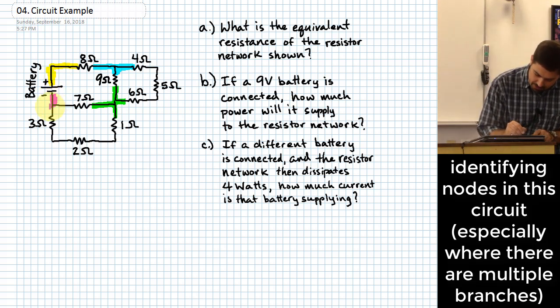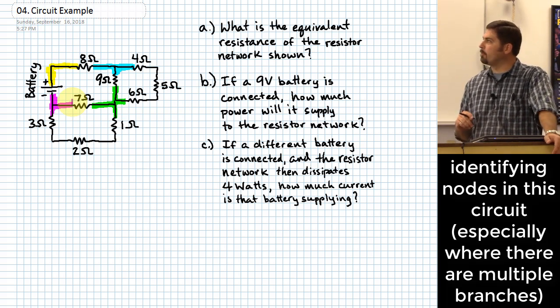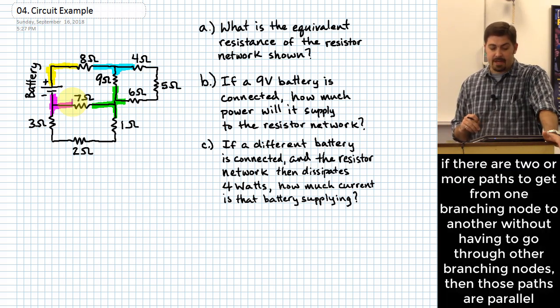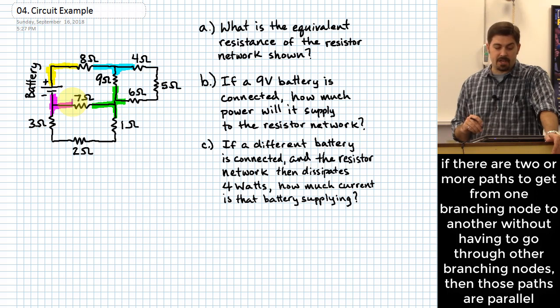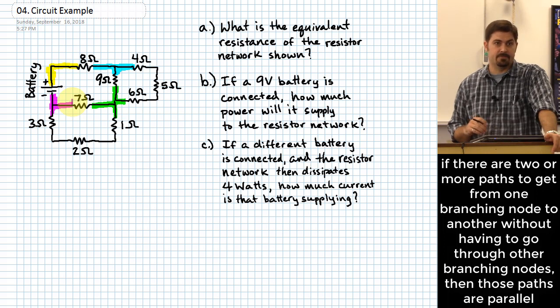So really, even though it's a good idea to be able to identify any node, the ones that we really care about are the ones where the current can split and go multiple different directions. Current coming in can go more than one place. And so here's where I would actually say for this problem, the blue, the green, and the purple that I've highlighted right there, those are the ones where it's really kind of interesting.